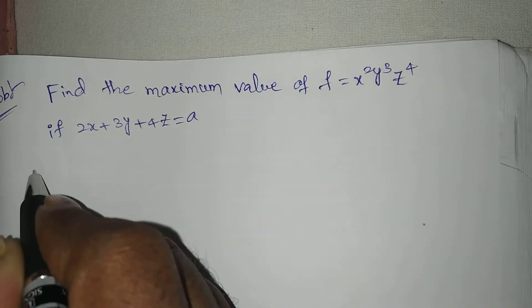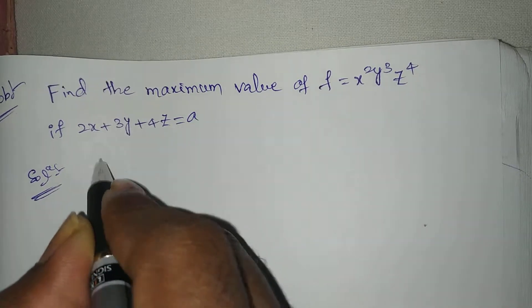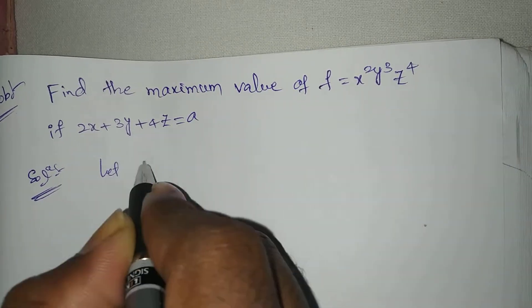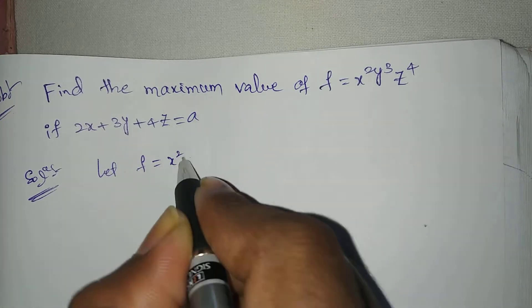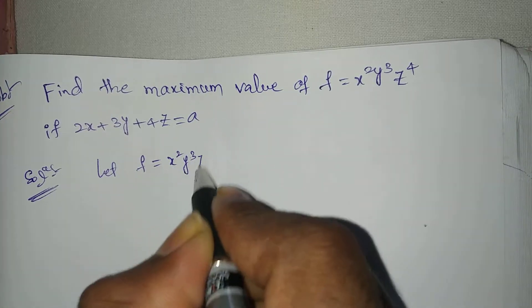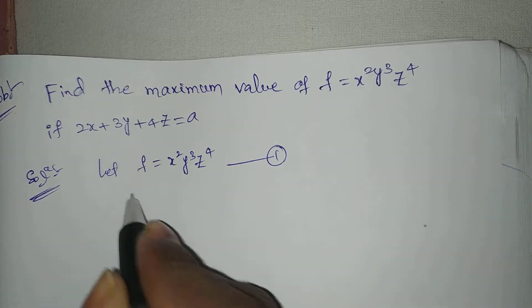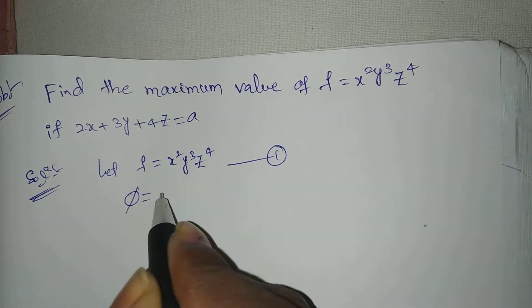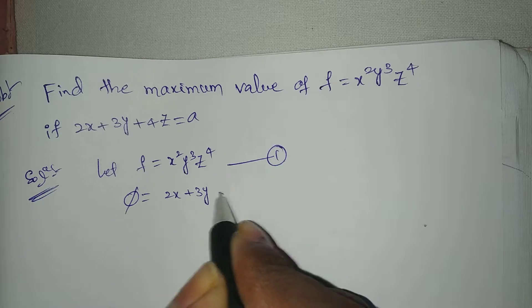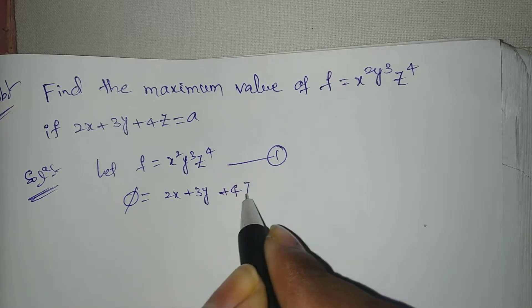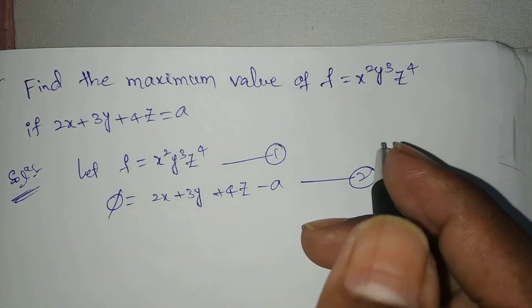Let f equal to x squared y cubed z to the power 4 — equation number 1 — and φ equal to 2x plus 3y plus 4z minus a — equation number 2.